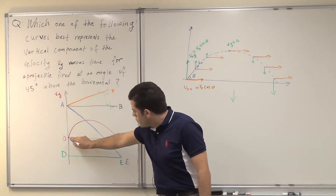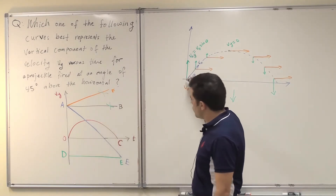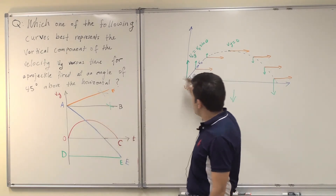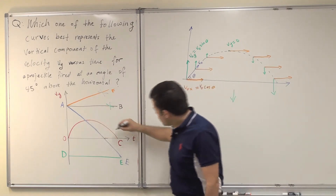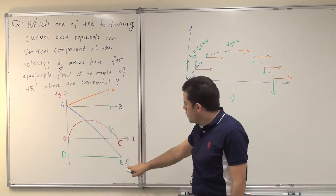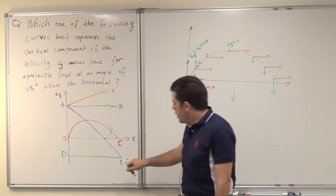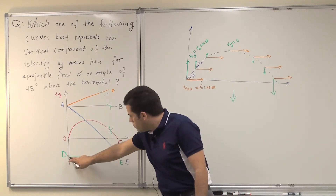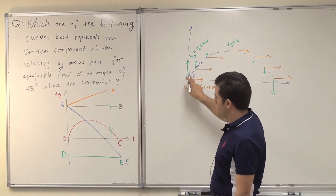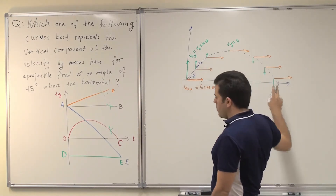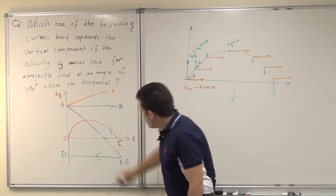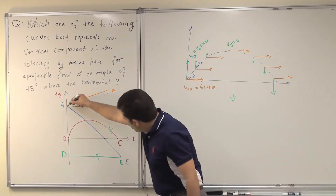Curve O to C indicates that velocity started from zero, which is not the case — it did not start from zero — then reached a maximum and went back to zero, which is also not the case. So this is not correct. Now let's take curve DE. This curve indicates that it started negative and kept constant, which is not the case. It started positive and large, then reached zero, then reversed direction. So I am left with only one choice, which is from A to E.